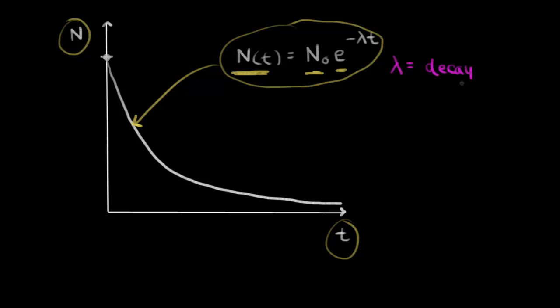Lambda is just some constant number — you could also call it k if you're thinking about the rate constant. It's just some constant multiplied by the time. Let's say we wanted to find what a specific point on our graph represents.